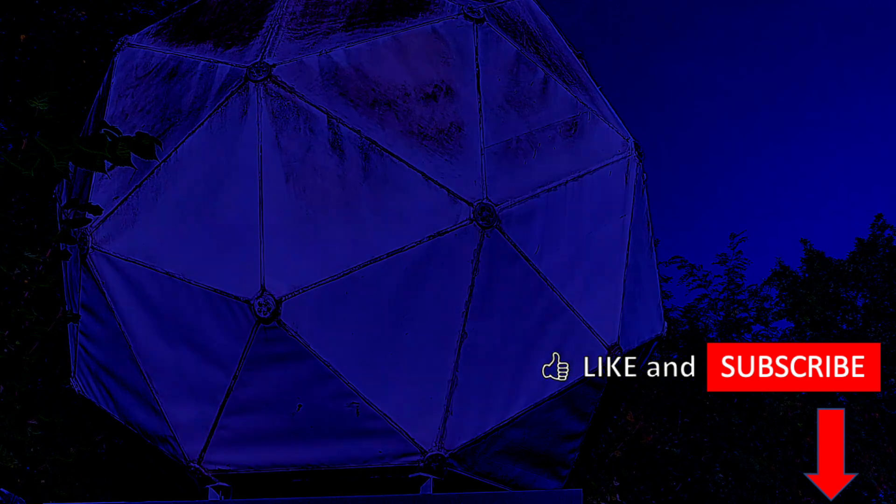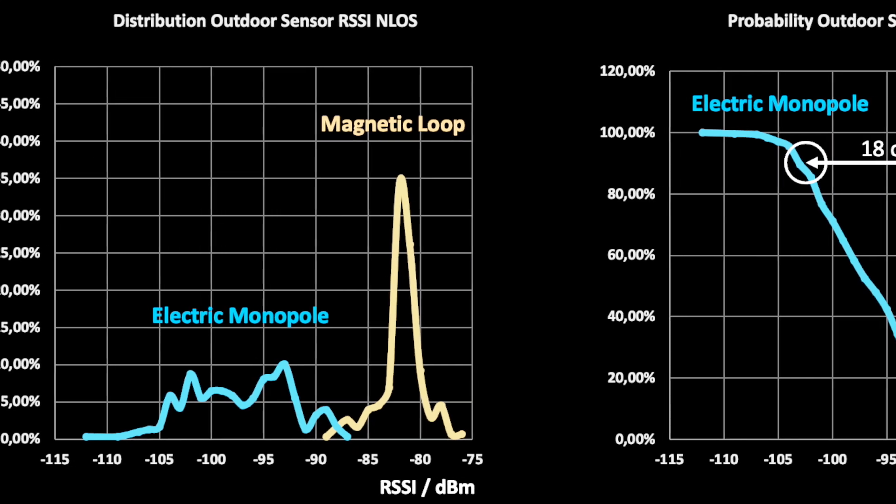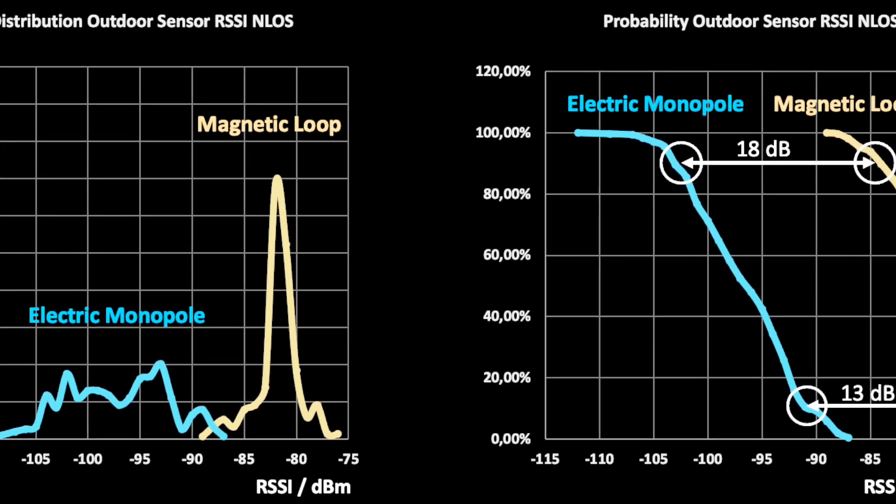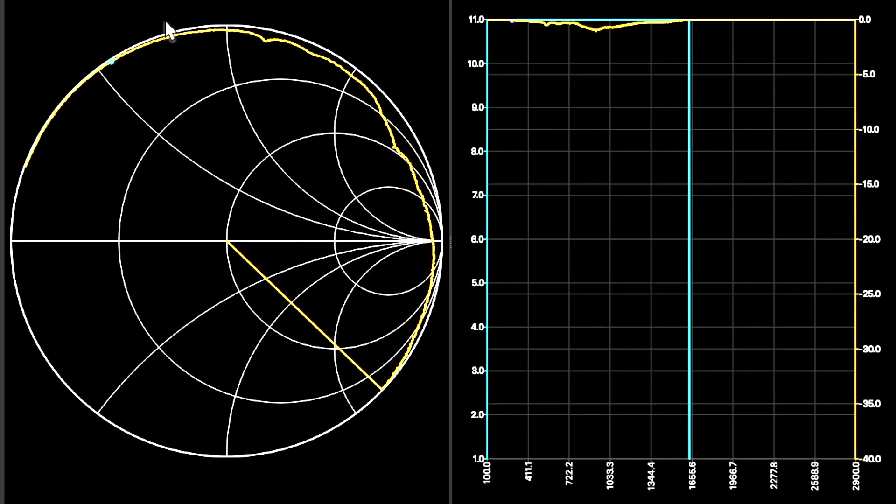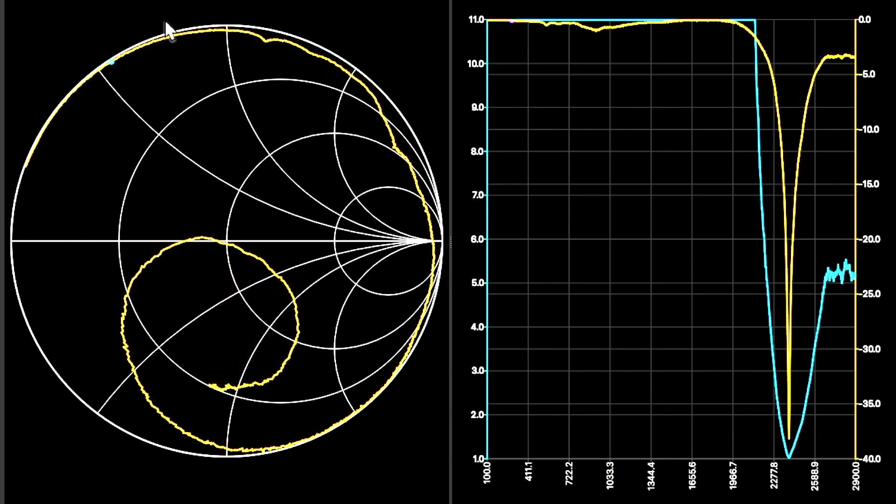Our original idea was improving the interference resilience of Wi-Fi, LoRa, Zigbee, Bluetooth, etc. using a frequency-selective antenna. Furthermore, we discovered additional advantages of this antenna principle in previous videos.